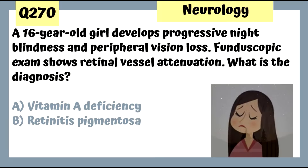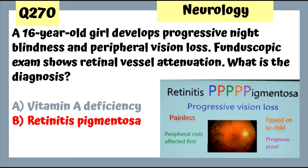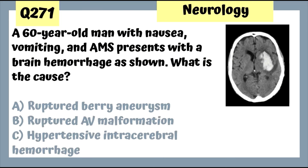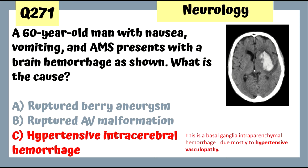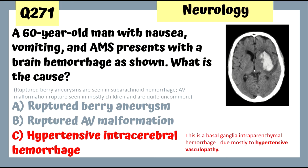Question 270: A 16-year-old girl with progressive night blindness and peripheral vision loss; fundoscopic exam shows retinal vessel attenuation — this is retinitis pigmentosa. Progressive vision loss is painless; peripheral rods are affected first; it is inherited and prognosis for vision recovery is poor. Vitamin A deficiency can cause xerophthalmia with excessive dryness and night blindness. Question 271: A 60-year-old man with nausea, vomiting, and AMS has a basal ganglion intraparenchymal hemorrhage — hypertensive intracerebral hemorrhage due to hypertensive vasculopathy.